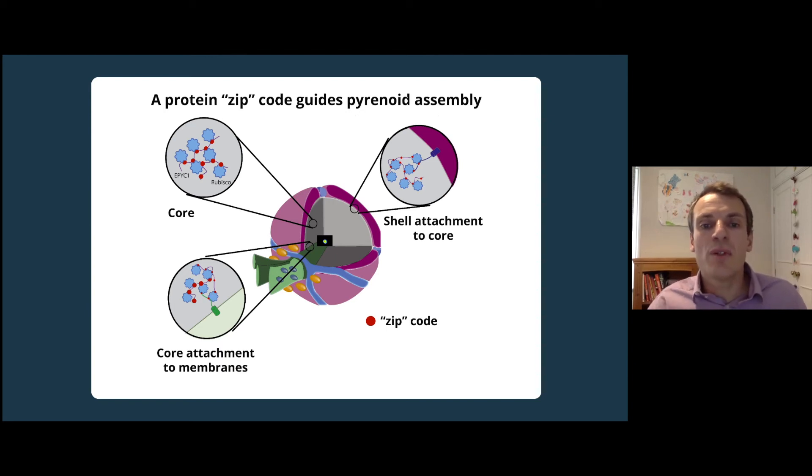Proteins that assemble the pyrenoid core around membranes have membrane binding regions fused to the zip code. And proteins that assemble the shell around the pyrenoid core also contain this zip code.